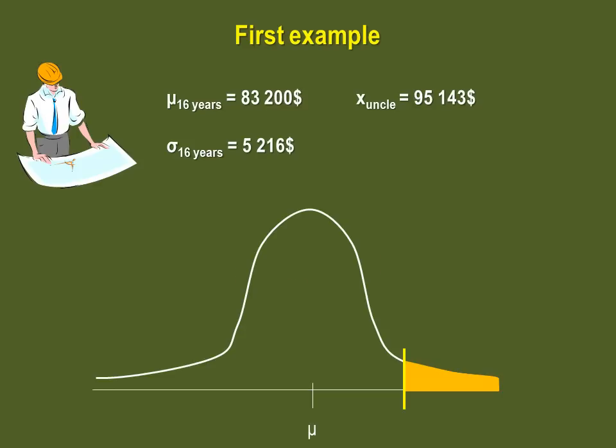Step 4 is to find the critical value. To do so, first sketch what you are looking for. This is a right-tailed test with a 5% level of significance, so your sketch should look like this, with a 5% area in the right tail of your distribution.